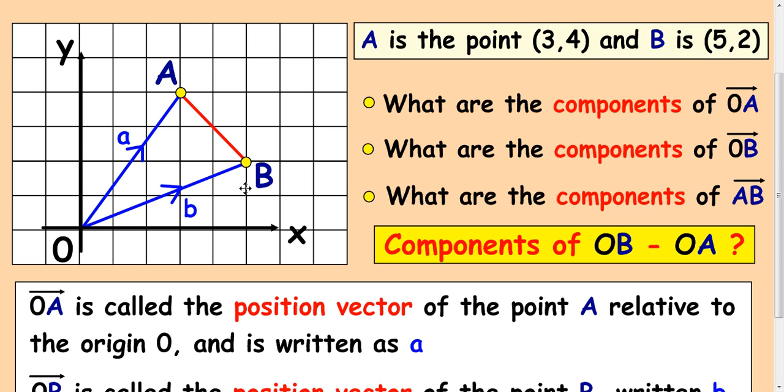Now here's the interesting thing: to get the vector from A to B, we can look at the components of B and A.